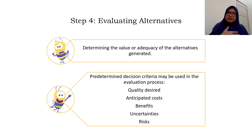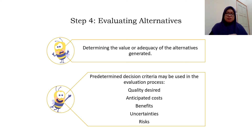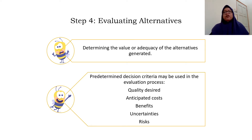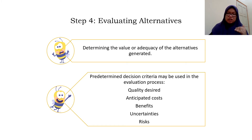After listing all the alternatives, they need to evaluate each one — looking at the benefits, advantages, and disadvantages for each alternative. There are certain criteria they can apply: for example, the quality and desired outcomes they want, the cost, the benefits, and the uncertainties and risks for each of the choices or alternatives.